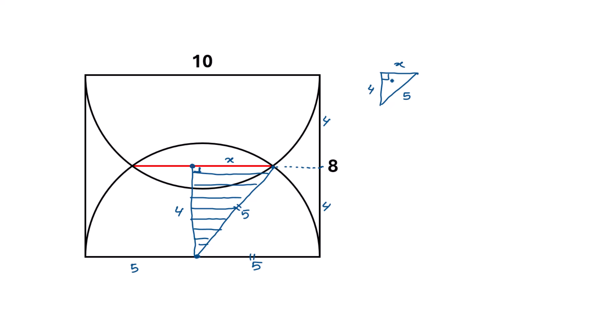So applying Pythagoras theorem here we can write x squared plus the height squared, so 4 squared, is equal to the hypotenuse squared, so it will be 5 squared.